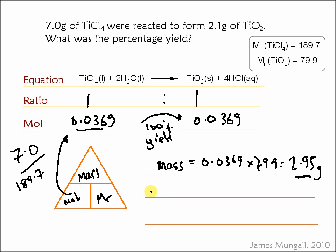Now, the percentage yield is going to be our actual yield, which was the 2.1, divided by that 100% yield, or the theoretical yield. And as you can see, we didn't quite get 100% yield. We've got 2.1 divided by 2.95, which comes out as 71%.